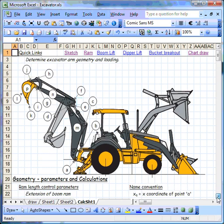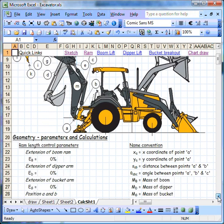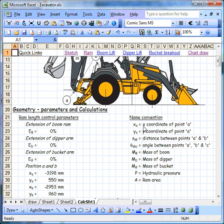We use a name convention for the calculation, quite a simple name convention. X designates the X coordinate, Y the Y coordinate. The distance between two points is given the parameter S. So SAB is the distance between points A and point B.